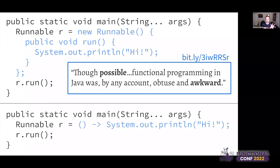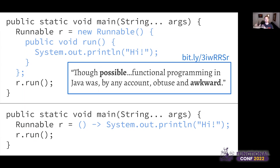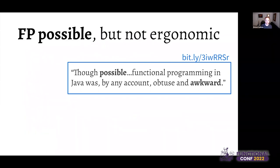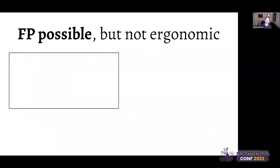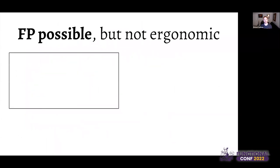I'm going to explore this from three angles. First: what are the minimal language features required to do functional programming? Second: what is the relationship between functional programming and math? Third: what is the functional programming style — regardless of what language you're doing it in? A common answer to the first question is lexical closures. Let me show you an example of what that means. Here's an inner class in Java, from an Oracle blog post announcing lambdas in Java 8.